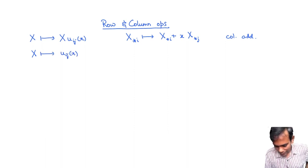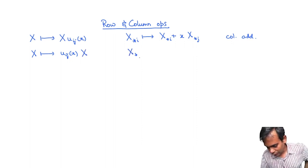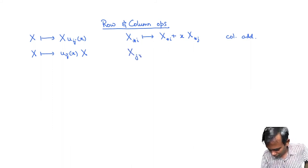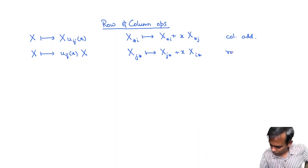And similarly if you take x and so now you would be multiplying it on the left which means that this u_ij(x) would be an m by m matrix of the type u_ij(x) and this would correspond to taking the jth row of x and replacing it by the jth row of x plus x times the ith row of x. This is called row addition.